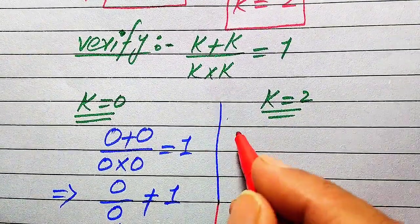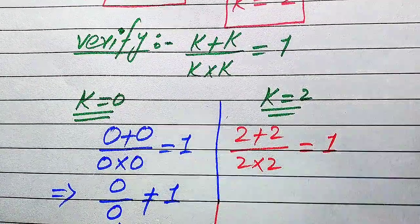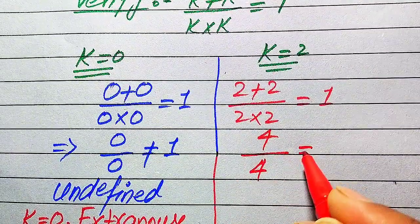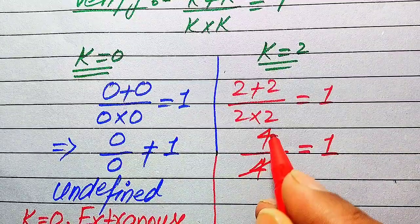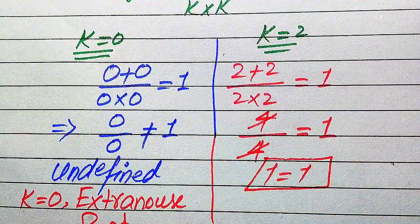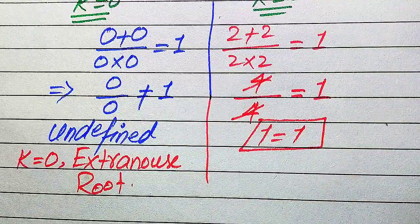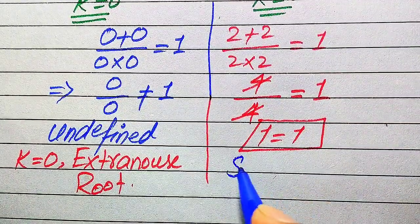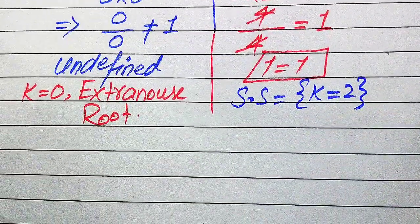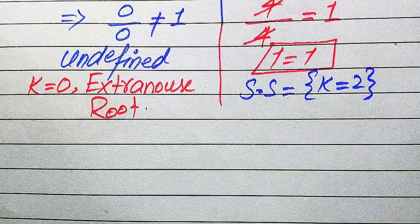Now we check the second root. We put k equals 2 into the left hand side: 2 plus 2 divided by 2, multiplied by 2, equals 1. This gives 4 divided by 4 equals 1. These two terms cancel out and we get 1 equals 1. This shows both sides are equal, meaning k equals 2 satisfies the given equation. The solution set of this question is k equals 2, which is the only solution. This is the final conclusion from the first method.